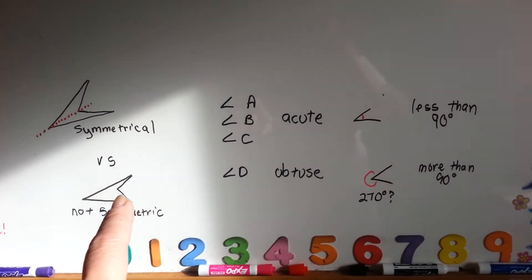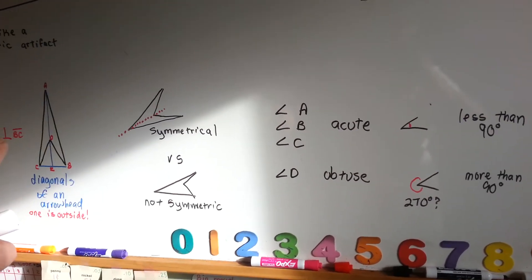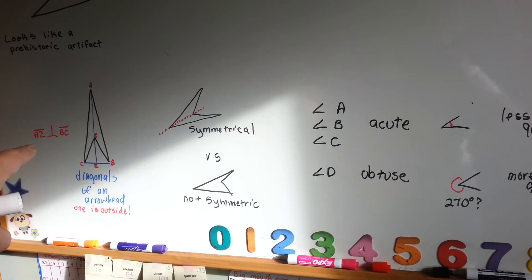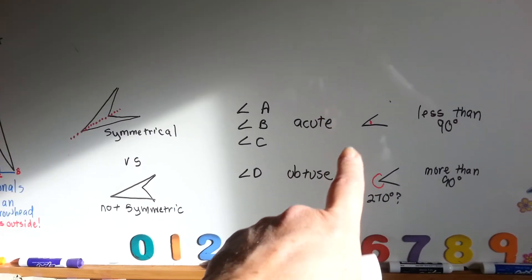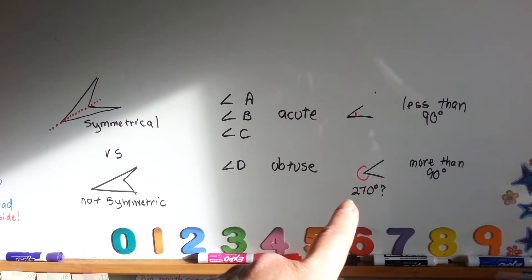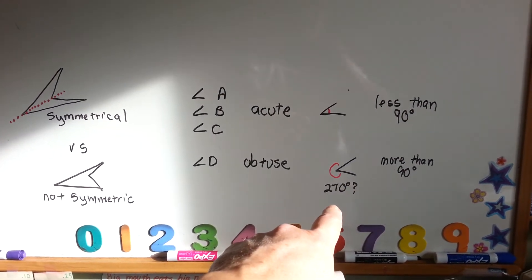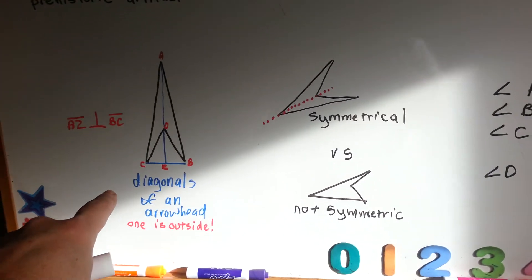So if you look, angles A, B, and C are acute. They're less than 90 degrees, but angle D is more than 90 degrees. It's obtuse. See? It could be like 270 degrees.